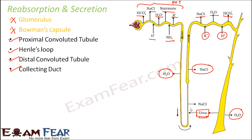This is how the process of reabsorption and secretion take place. By now you know all three steps of urine formation — filtration, reabsorption, and secretion — and should have a fair idea about how urine is formed.